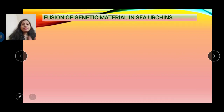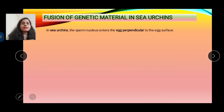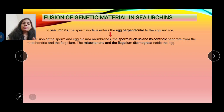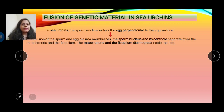After egg activation, the male and female pronuclei fuse. In sea urchin, the sperm nucleus enters the egg perpendicular to the egg surface, whereas in mammals sperm enters horizontally. After entering, the sperm nucleus separates from the mitochondria and flagellum, both of which disintegrate inside the egg. Therefore, the mitochondria present in the embryo are inherited from the mother — mitochondrial inheritance is maternal.